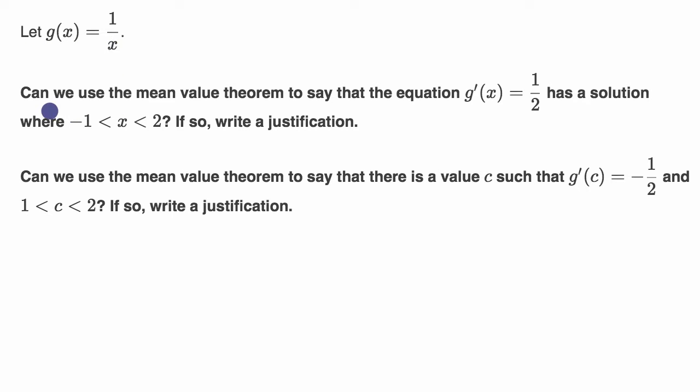Let g of x equal one over x. Can we use the mean value theorem to say that the equation g prime of x equals one half has a solution where negative one is less than x is less than two? If so, write a justification.